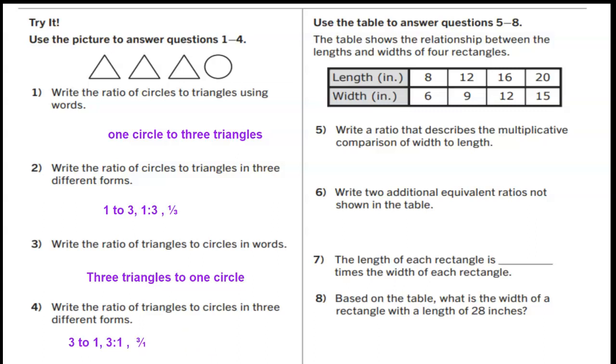Now let's use the table to answer questions five through eight. The table shows the relationship between the lengths and widths of four rectangles. Write a ratio that describes the multiplicative comparison of width to length. Pause the video and write the information down.